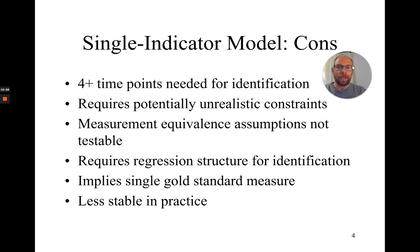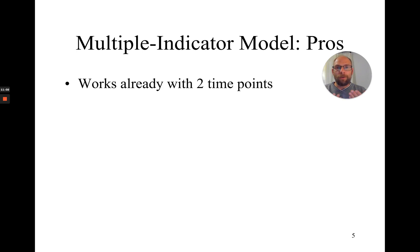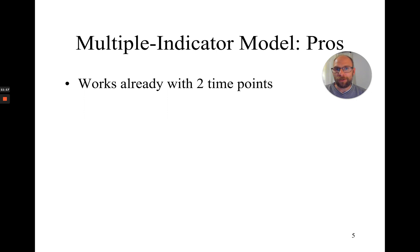Now the pros of multiple indicator models. Perhaps the most serious advantage is flexibility in terms of the number of time points required. When you have multiple indicators, you can run a change score model with just two time points — it is already identifiable with two time points, which is a big advantage since longitudinal studies can be costly, and fewer required time points is a meaningful benefit.